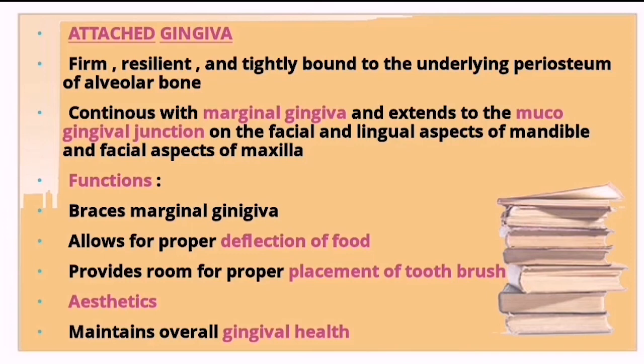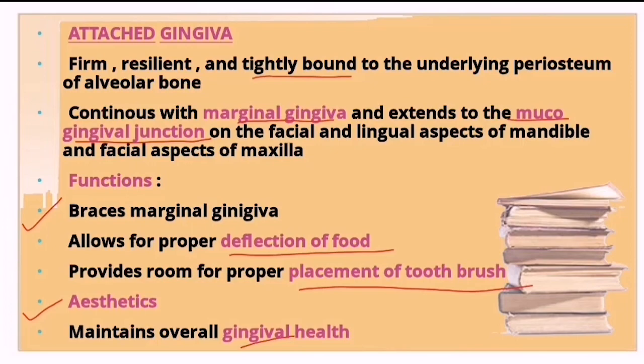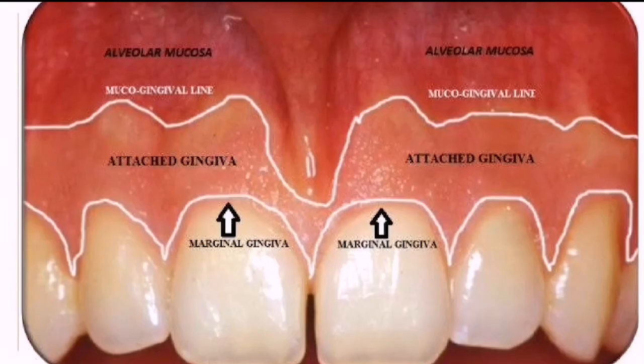Attached gingiva is a firm, resilient, and tightly bound structure to the underlying periosteum of the alveolar bone. Coronally it is continuous with the marginal gingiva, and extends down to the mucogingival junction. Its functions include bracing the marginal gingiva, allowing proper deflection of food, providing room for toothbrush placement, playing a role in aesthetics, and maintaining overall gingival health.